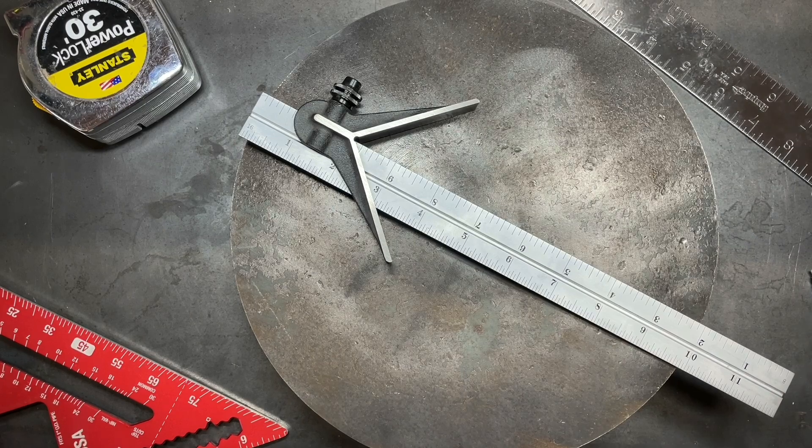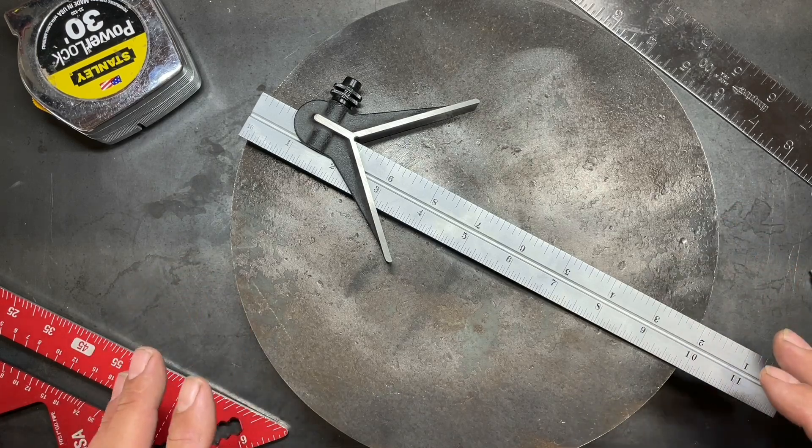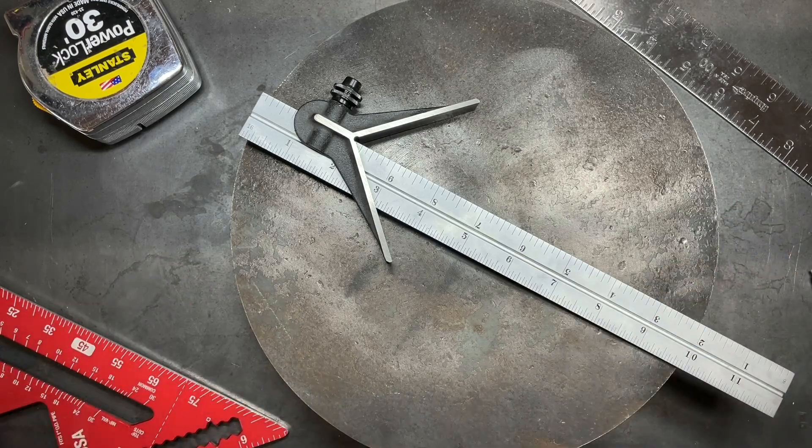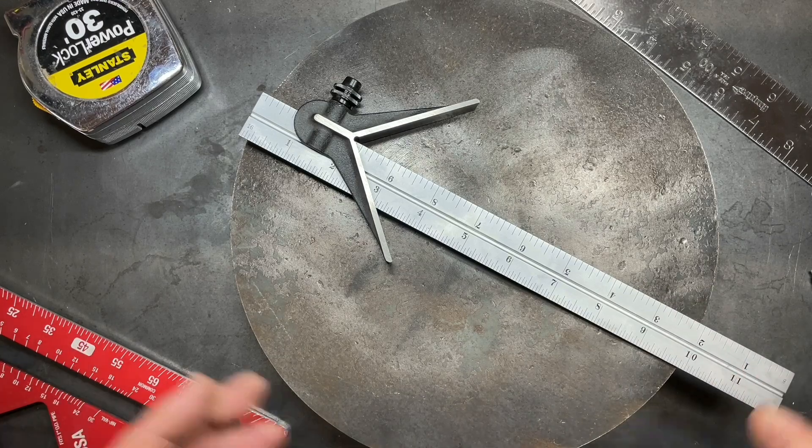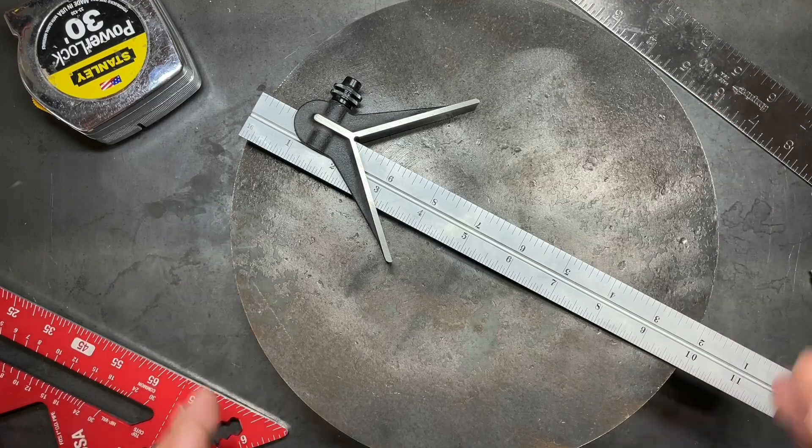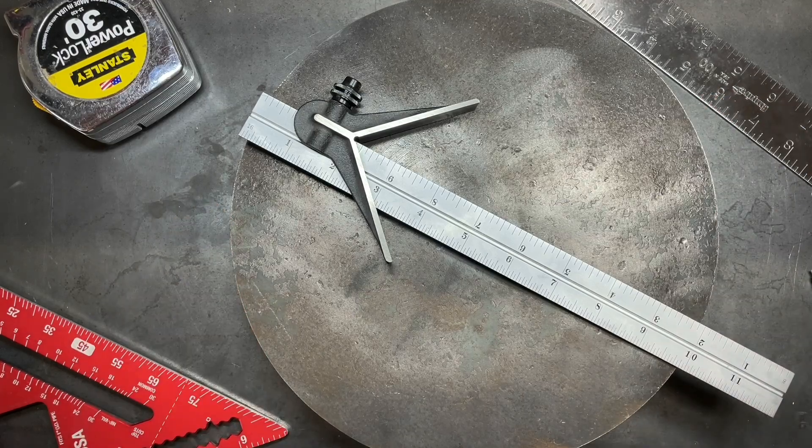What I'm going to show you today is what I believe is the easiest method to find the center of a circle that is not in a plane, that's not written on a piece of plywood or a plate of steel or something like that. Basically, you already have your circle made, whether that be out of wood or steel or plastic or what have you.